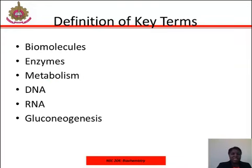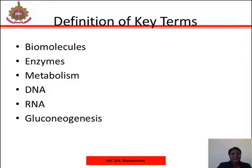Let's look at some key terms you will encounter throughout this course. A biomolecule is any molecule produced by a living organism, including large macromolecules such as proteins, carbohydrates, lipids, and nucleic acids, as well as small molecules such as primary metabolites, secondary metabolites, and natural products. Enzymes are biological molecules responsible for the thousands of metabolic processes that sustain life. Metabolism is the set of life-sustaining chemical transformations within the cells of living organisms, and it is usually divided into two categories: catabolism and anabolism.